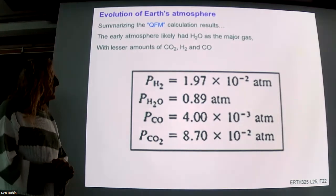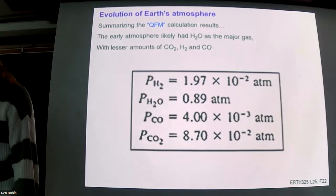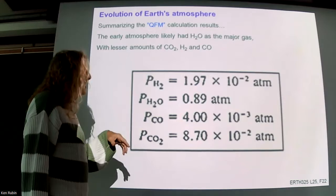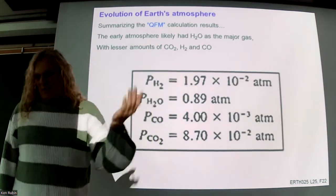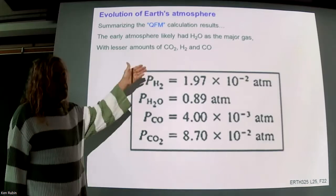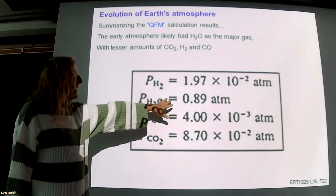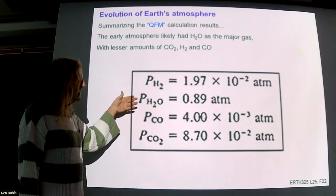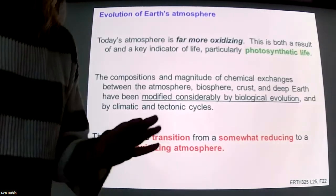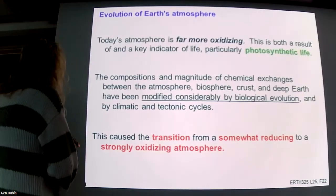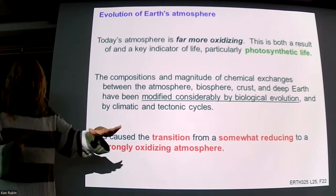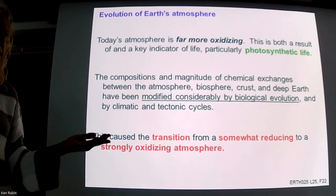So if you remember, I went through a calculation for you about the oxidation state of our early atmosphere. You can see how there's something like 2% of what we consider the present atmosphere of pressure would have been made up by hydrogen, and a significant fraction would have been water, and then some amount of carbon monoxide and CO2.